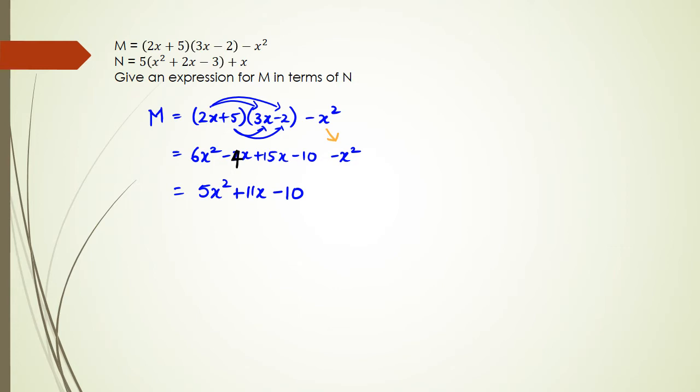Okay, so that's M. Now let's actually try and do N. So with N, what we have is 5 multiplied by x squared plus 2x minus 3 and plus x. So we've got 5 times x squared is 5x squared, 5 times 2x is plus 10x, 5 times negative 3 is negative 15, and of course we got that plus x which was just there in the original equation. So simplifying this, what we have is 5x squared plus 11x minus 15.